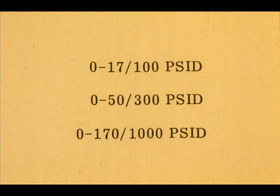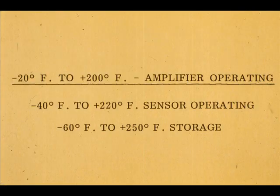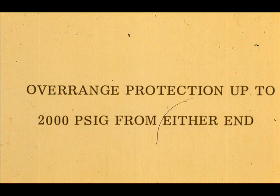The Rosemount high differential pressure transmitter is suitable for measuring the PSI differentials shown on this table. The operating temperature limits on the sensing element are −40 to 220°F; oversteam tracing or overheating by any means will destroy the silicon oil-filled sensor module. The amplifier operating temperature limits are −20 to 200°F. The transmitter will withstand an overrange up to 2,000 PSIG without damage, but it is good practice to recheck calibration after any severe overrange.